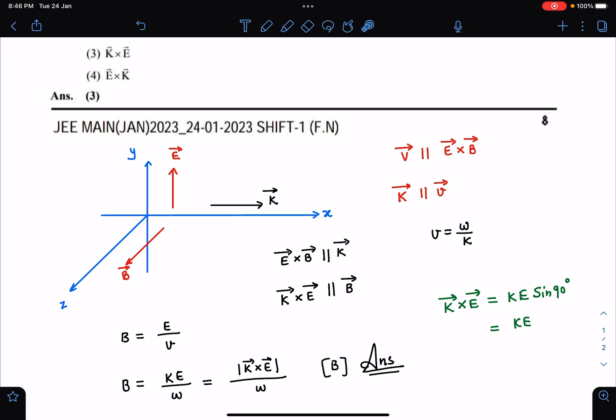In this diagram you can check clearly this K cross E will be pointing towards B, so I can say that K cross E is parallel to B. Now we know that for EM waves, its velocity is always E/B.